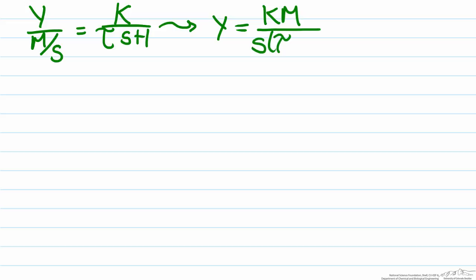So what we can now do is substitute in m over s for x and we end up with y over m over s equals the generic first order transfer function in standard form. If we move the m over s over we end up with y equals km over s times tau s plus one.